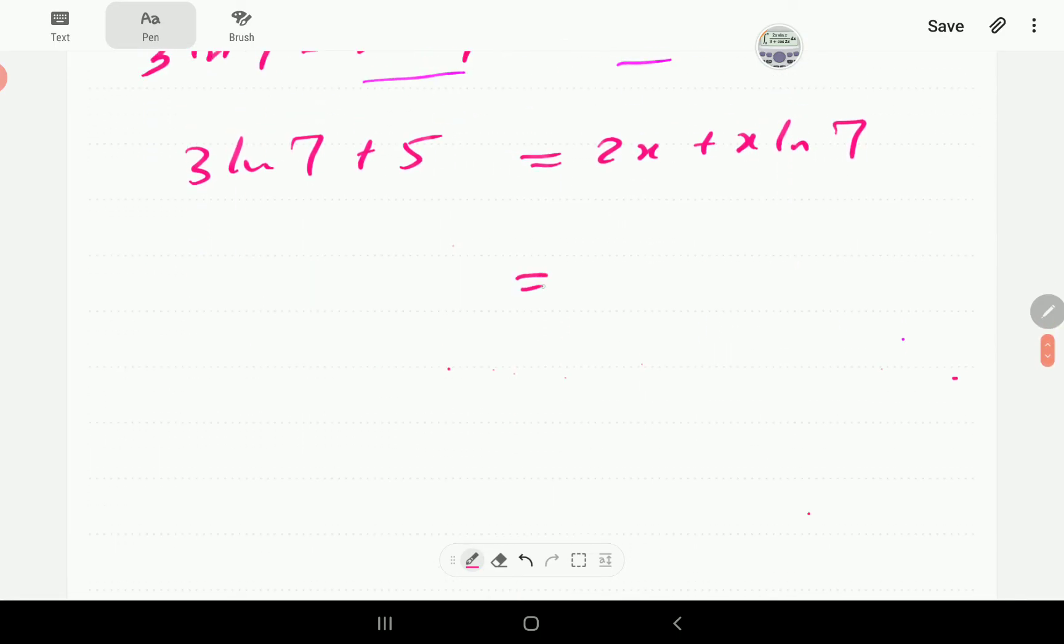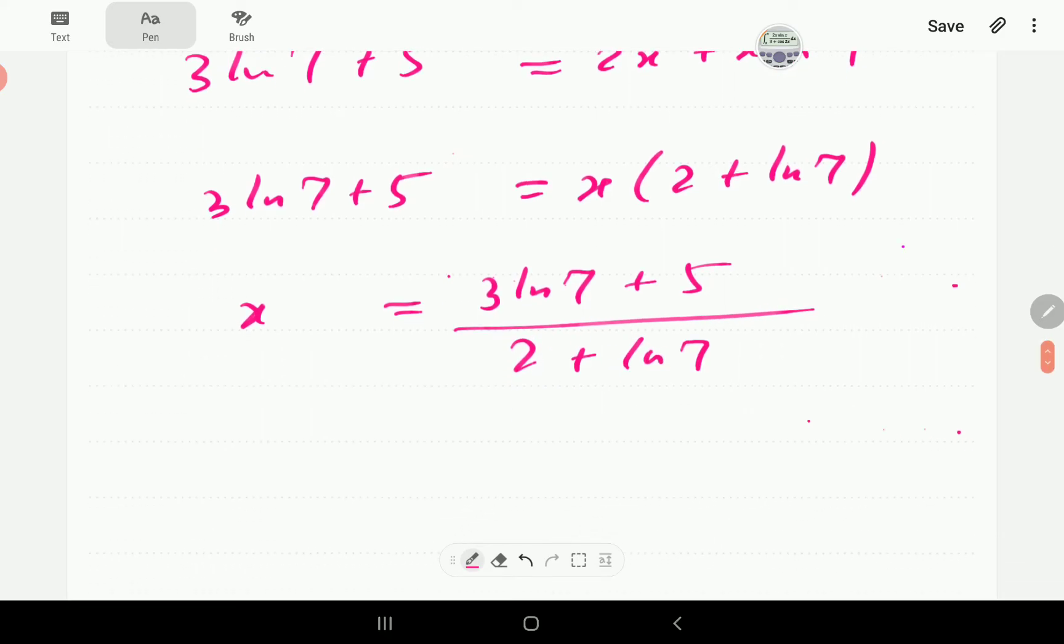Then taking the 5 to the left hand side is going to give us plus 5 here. Then on the right hand side, if we factorize x, it's going to be 2 plus ln 7, 3 ln 7 plus 5. And then from here, it means x is 3 ln 7 plus 5, all divided by 2 plus ln 7.